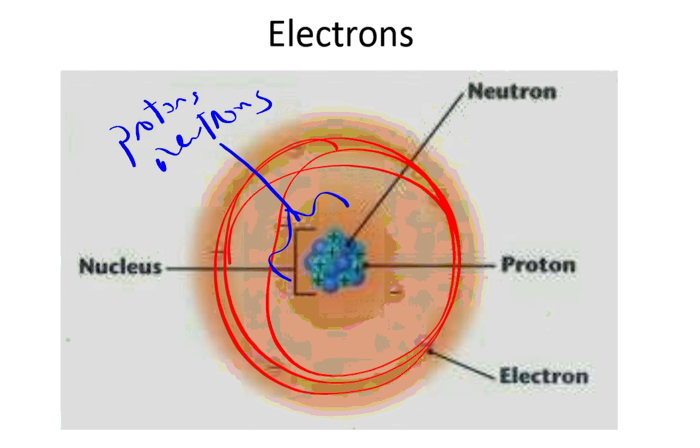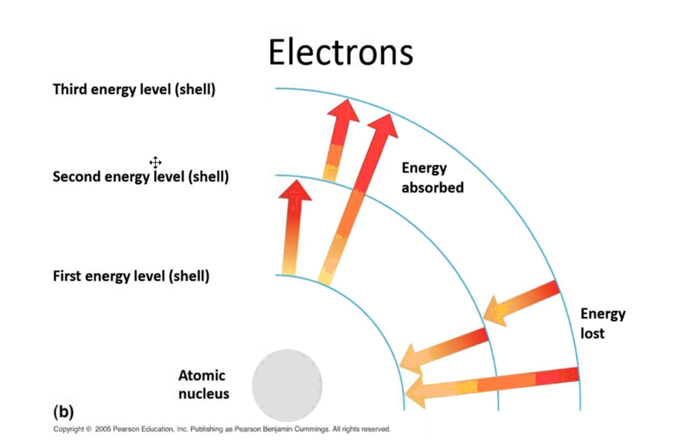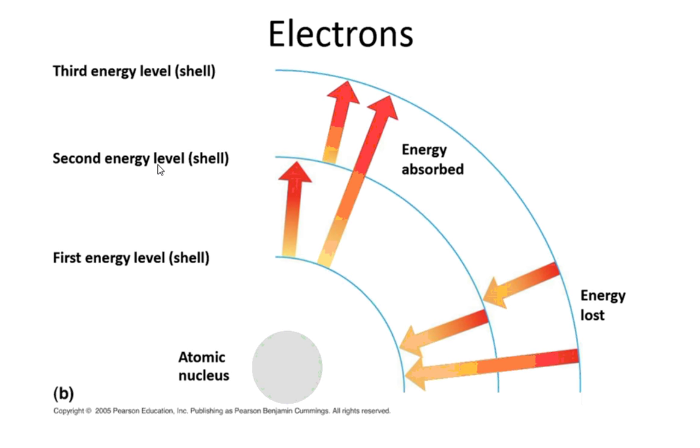The electrons are always floating around outside of the nucleus. The electrons are going very fast, and that's why they call this an electron cloud, because it's hard to pinpoint where they are at any one time.